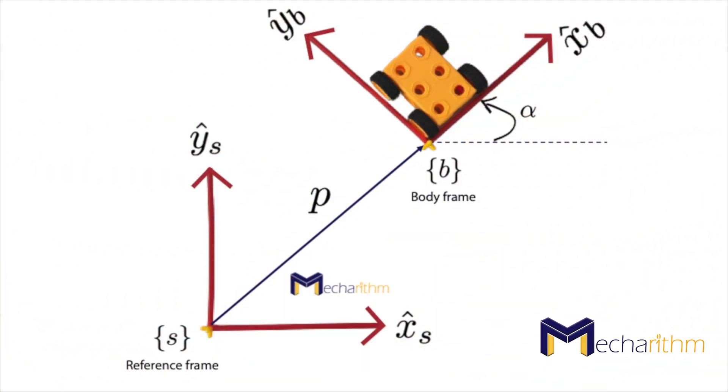We start this lesson with a planar example to see what we mean to express the configuration of a robot. Suppose a toy car with its motion confined to the plane and two coordinate frames s and b with their corresponding unit axes. Note that a hat notation shows a unit vector.